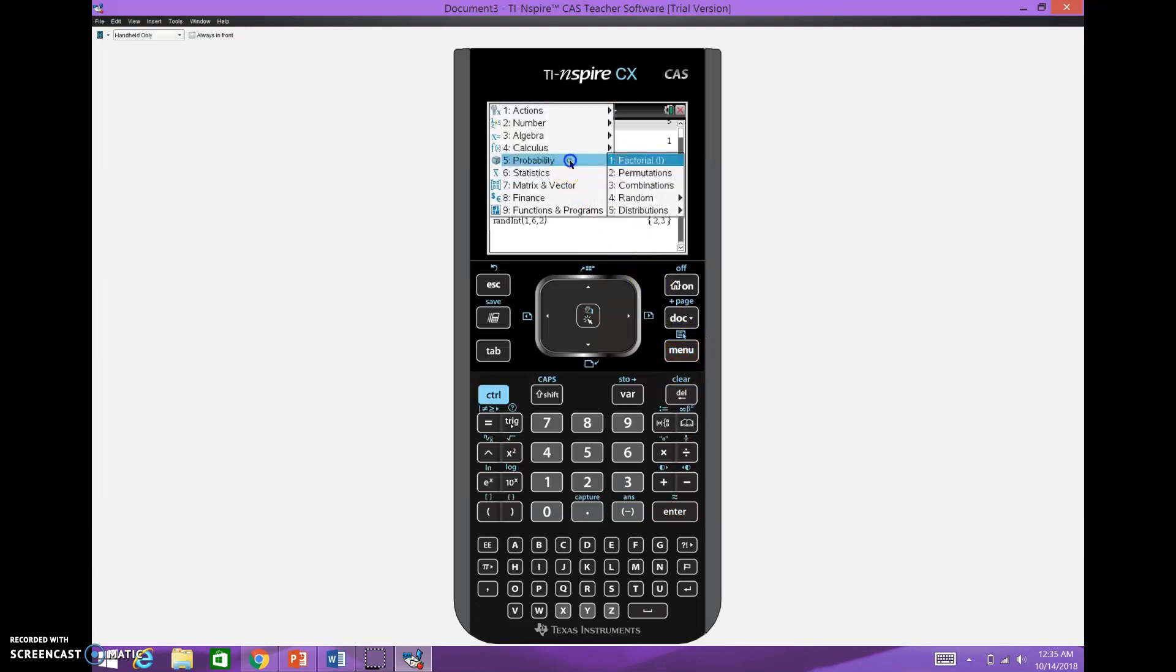again, I go Menu, Probability, Random, Integer, and I can just go one, comma, 28. And if I wanted four hotels, I've got an issue with that because sometimes what might happen is I might get a repeat like I did right here. You've got one and one, so I really only have three hotels.